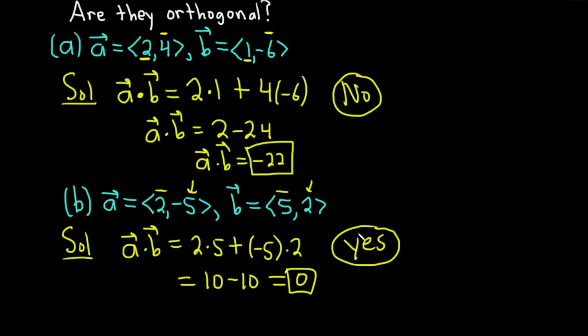The answer is yes, the two vectors are perpendicular or orthogonal. That means they make a 90-degree angle if you were to graph them in the plane. Let's do one more example like this.